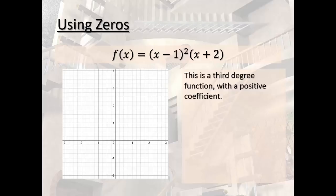All right. Now, based on our left and right-hand behavior from the leading coefficient test, that tells us that our graphs are going to be going in that direction. That's that table that we had in the last one. Positive 3rd degree goes in that direction.